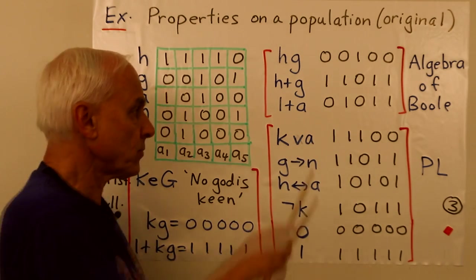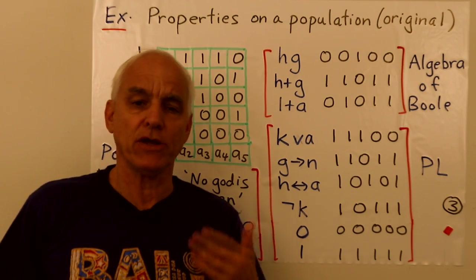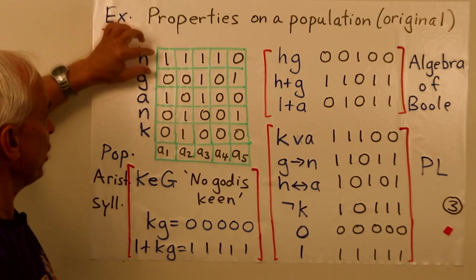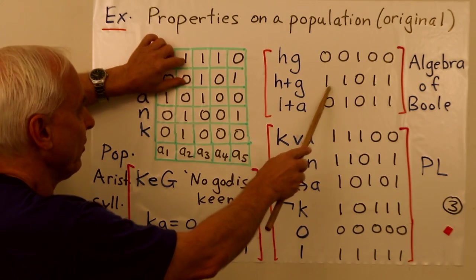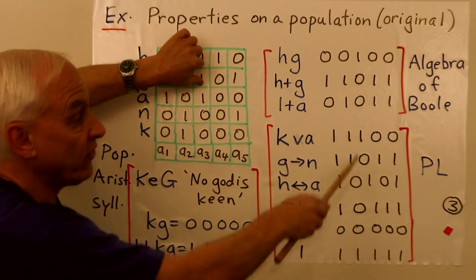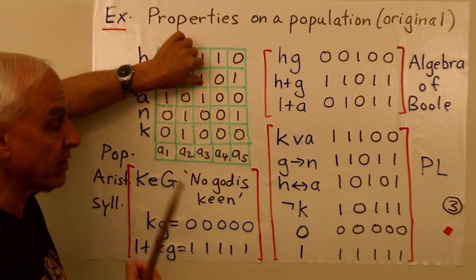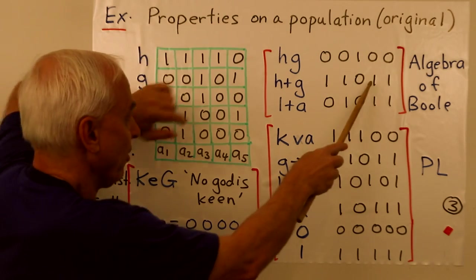We can add them, and the addition is also a mod 2 operation. So H plus G is, we're adding, 1 plus 0 is 1, 1 plus 0 is 1, 1 plus 1 is crucially 0 because this is a mod 2 operation, and these guys here are also 1s.